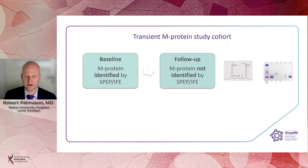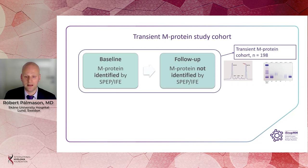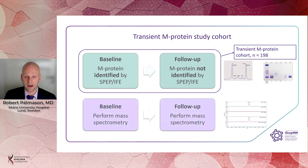Looking at the transient M protein cohort, they are defined as individuals with a positive SPEP or IFE at baseline but negative at follow-up. We found 198 such individuals comprising the transient M protein cohort, and we went back and performed mass spectrometry in these samples to determine whether these transients might be related to the analyzing methods chosen.